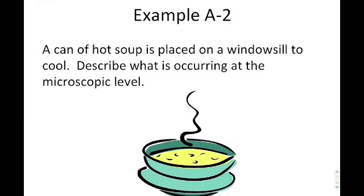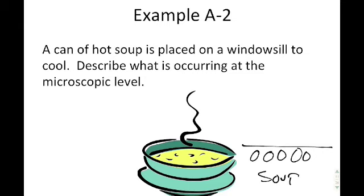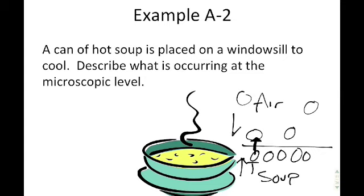Example A2: A can of hot soup is placed on a windowsill to cool. At the microscopic level, you have soup molecules and air molecules. The air molecules are at a lower temperature. When the soup molecules and air molecules collide, energy is transferred from the soup molecules (high temperature) to the air molecules (low temperature). Some of that energy is carried off by the air particle, which now has a higher temperature — heat flows from soup to air by collisions.